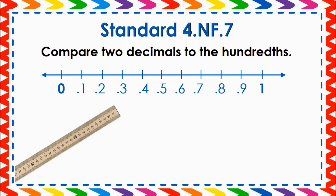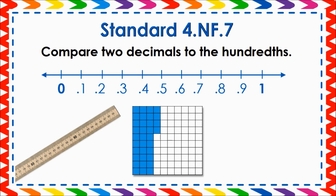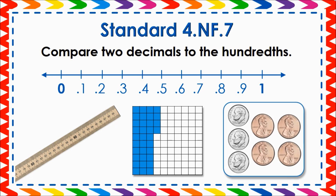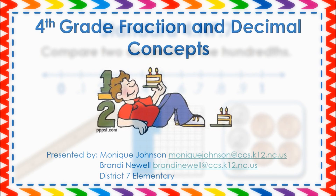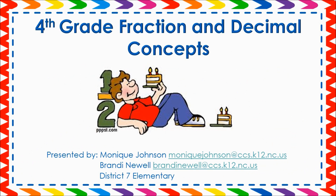Continue to use the visual models from standards NF5 and NF6 when comparing two decimals. Besides continuing to use the same models from standard NF6, you can reuse the activities Dollar Word Search and Toss-a-Meter. With Dollar Word Search, have partners compare the values of their names. With Toss-a-Meter, partners can compare distances their paper ball was thrown. Thank you for watching the video, Fourth Grade Fraction and Decimal Concepts.